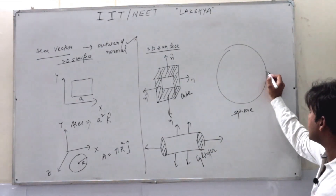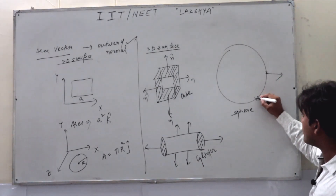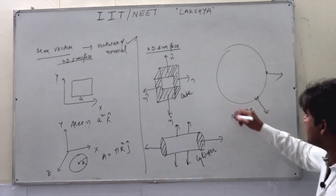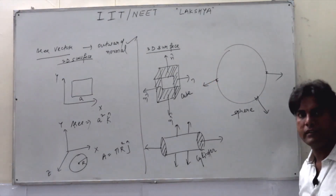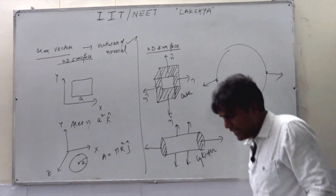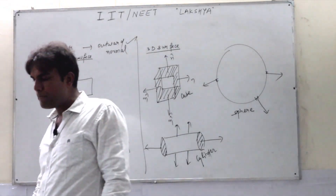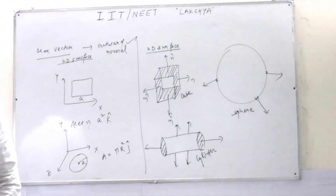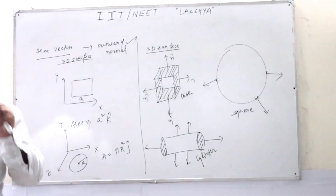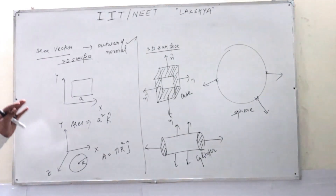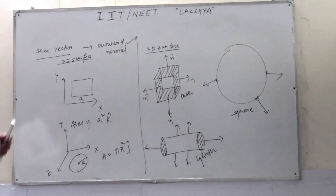For a sphere, suppose you want to take a small surface element dA — then this is the outward normal. If you take another small surface, this is its outward normal. So basically what I am trying to say is that area is a vector quantity: write the magnitude of the area and the outward normal — normal means perpendicular. That is the convention of taking the area vector.